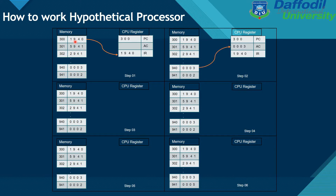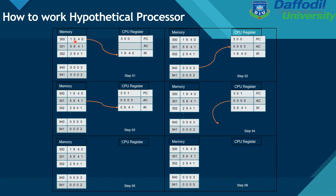The third step: the second memory address is 301 and the data is 5941. The opcode 5 means 'Add AC from memory', so the AC value and 0002 from memory address 941 are added together, and we get 0005. This value replaces the previous value in the AC.